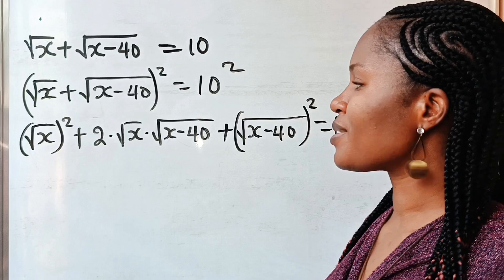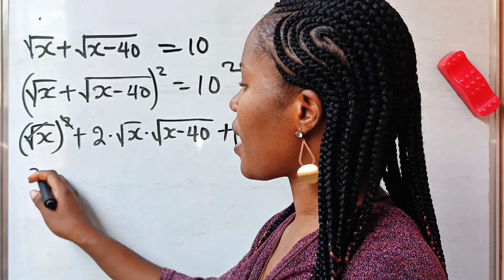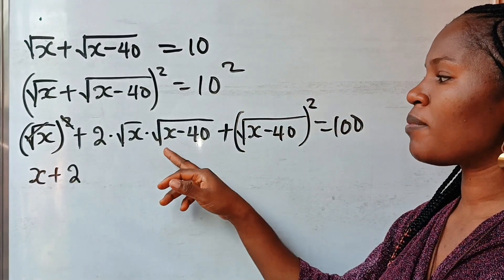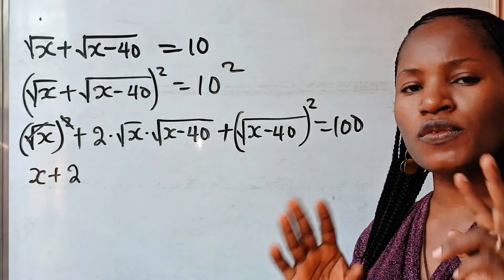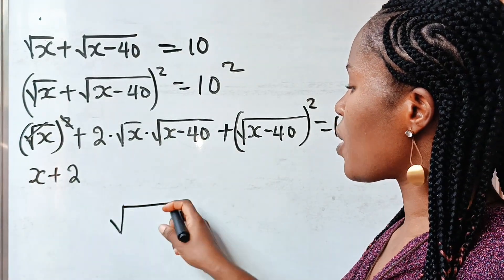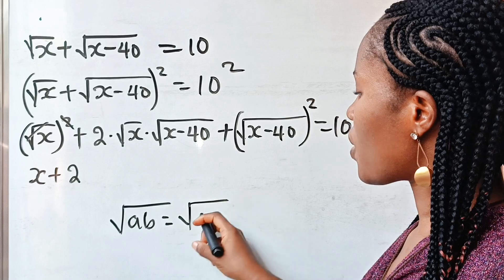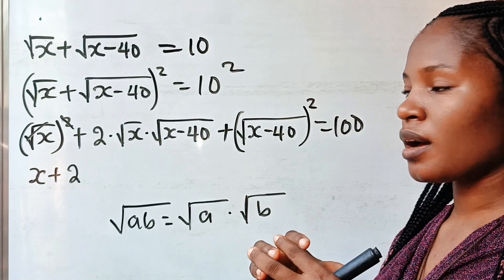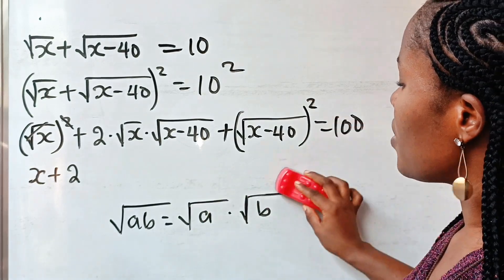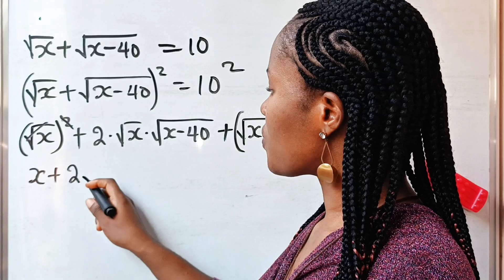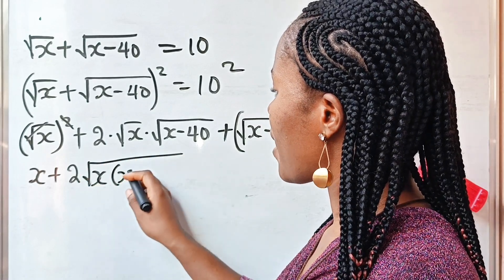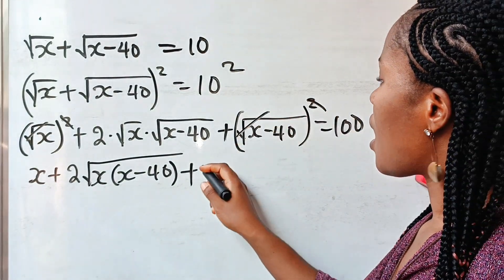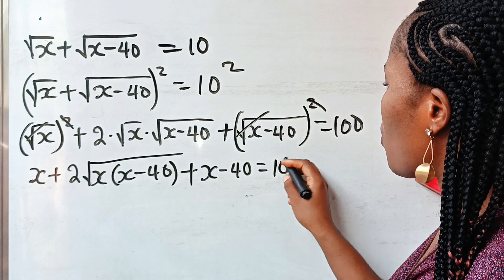Now let's cancel out. Square root of x squared gives us x. For the middle term, we have 2 times root x multiplied by root of x minus 40. Remember the rule that states that square root of ab is equal to square root of a multiplied by square root of b. So since they are apart, we can bring them together under the same root sign, expressing this as square root of x multiplied by x minus 40. And the last term — square root of x minus 40 squared — removes the square root sign, leaving us x minus 40, all equal to 100.